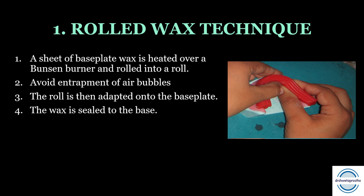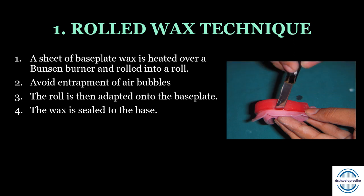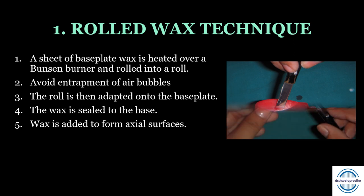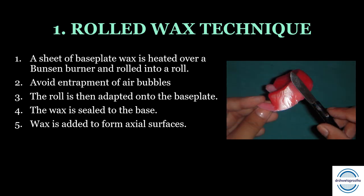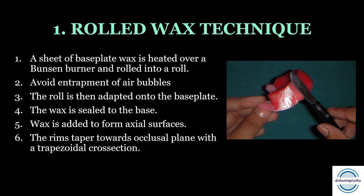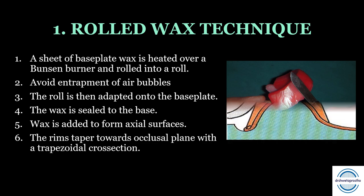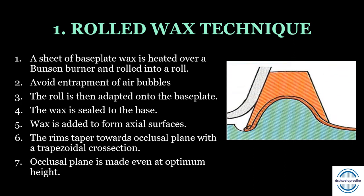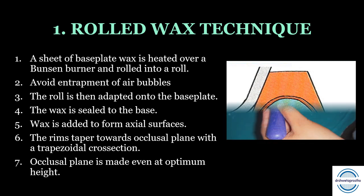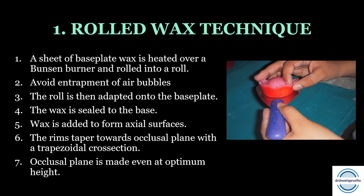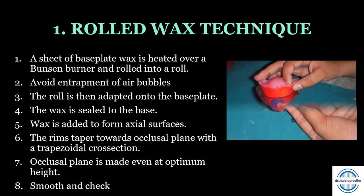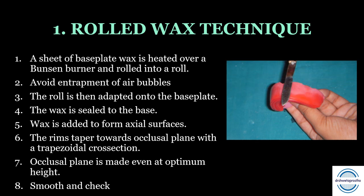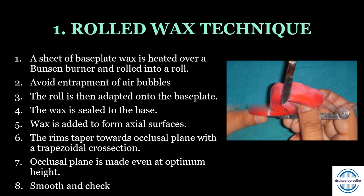The wax is then sealed to the base plate with a hot spatula or the curved end of a wax knife. Wax is added to form the axial surfaces — the labial and lingual surfaces — and the rims should taper towards the occlusal plane with a trapezoidal cross-section. The occlusal plane is made at the optimum height using a hot plate, then smoothed to eliminate any roughness, and finally the dimensions are checked.